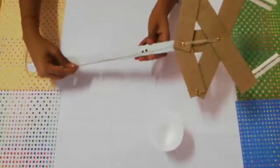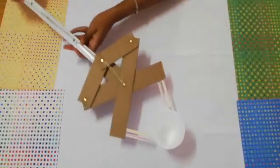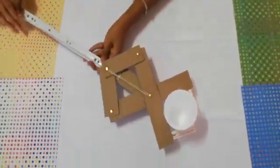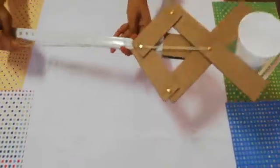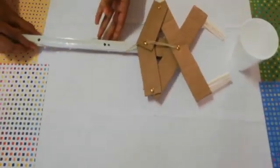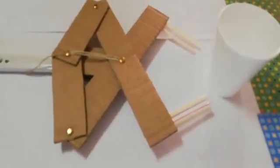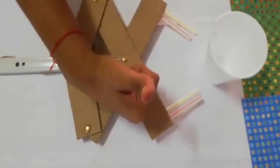Our articulated grabber is now complete and we can test it out by picking up this paper cup. This was a really fun and easy activity to do and we'd really love for you to try it out at home. Please remember that if you are using sharp objects like scissors or a craft knife, you need to have adult supervision. Don't forget to like, share, and subscribe to our channel. Bye bye!